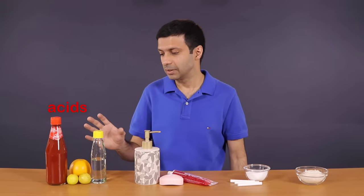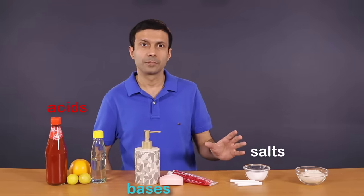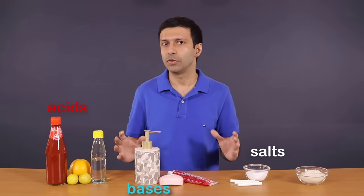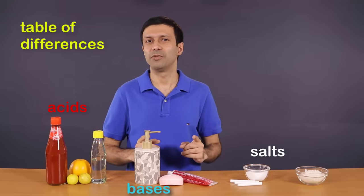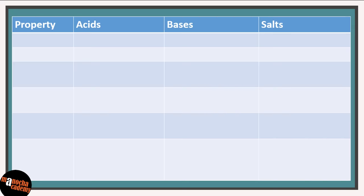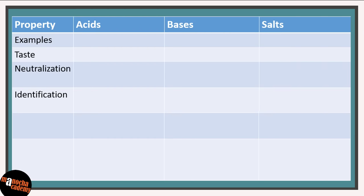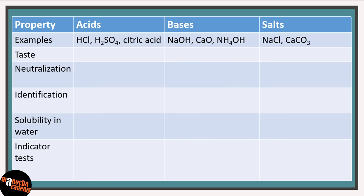Now that we have looked at some examples of acids, bases and salts, let's take a look at the properties of each and how they differ from each other. Let's build a table of differences together. The six important things we will look at are: examples, taste, neutralization, how to identify acids, bases and salts, solubility in water, and indicator tests. Let's start by filling in some examples of each.